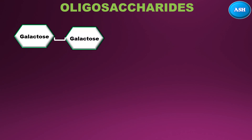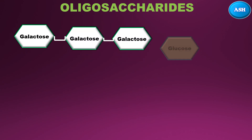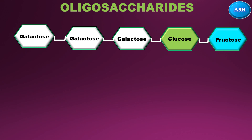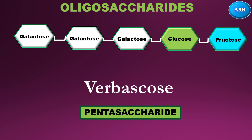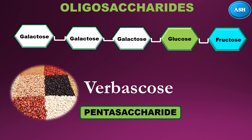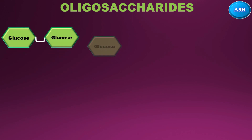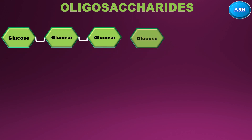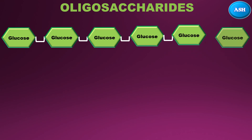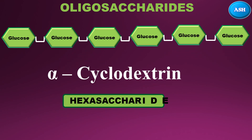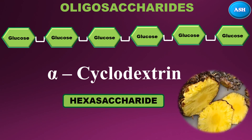The third part of oligosaccharides has five units — three galactose, one glucose, and one fructose — which are linked together to form verbascose. It is also known as a pentasaccharide, and verbascose is found in legumes. Next are oligosaccharides with six units of glucose linked together to form alpha-cyclodextrin, which is found in food-grade enzymes such as those from pineapples.